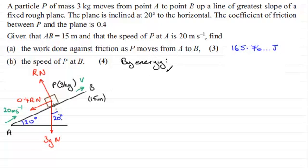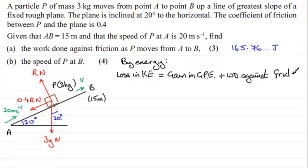So how can we utilize energy? Well, as the particle is projected up the plane AB here, it loses kinetic energy. And that loss in kinetic energy is equivalent to the gain in gravitational potential energy as it gains height here. But because the plane is rough, there's also the work done against friction. So by energy, the loss in kinetic energy as it travels up the slope is equal to the gain in gravitational potential energy, GPE there for short. And to this we would add the work done against friction.